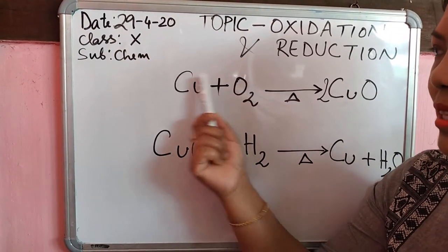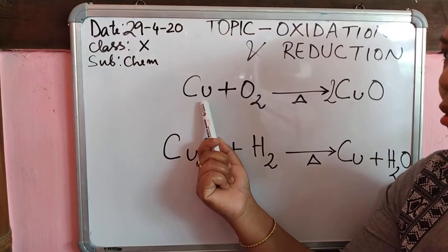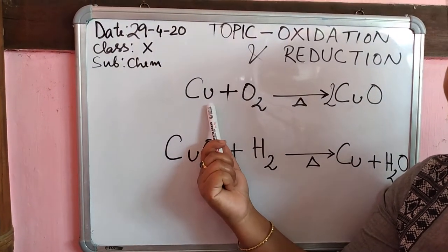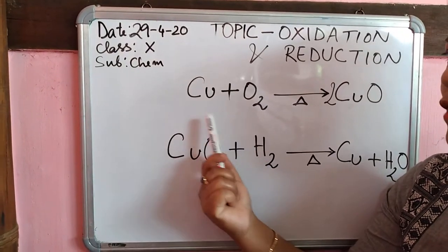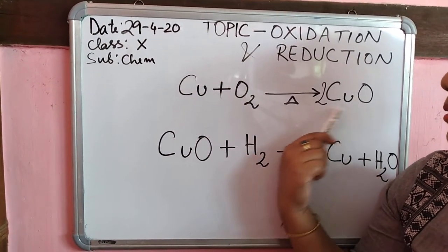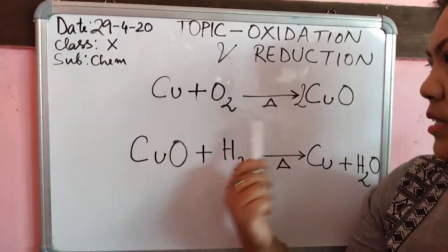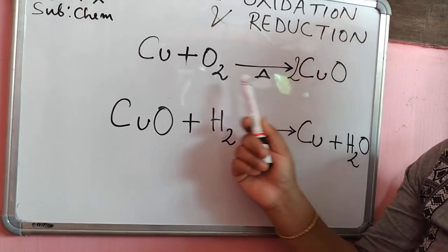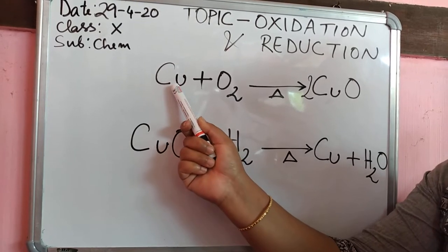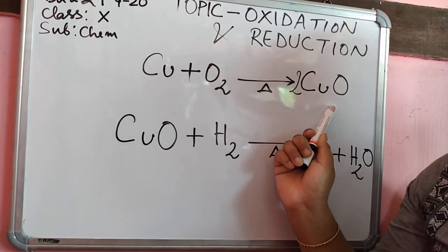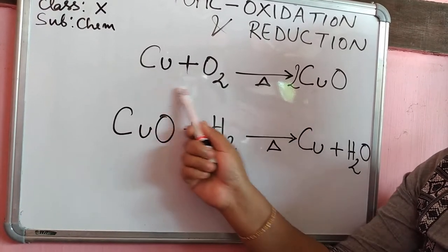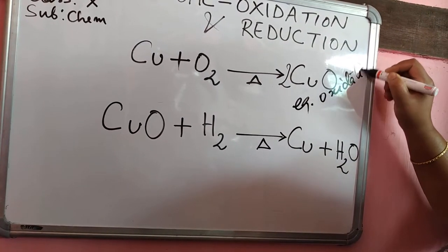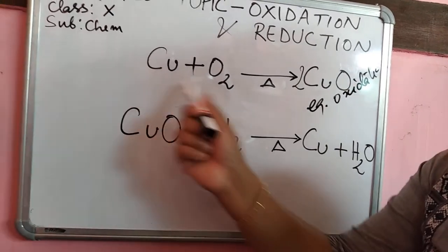Copper has a reddish brown surface. When you heat copper powder in the presence of oxygen, the surface of the copper gets coated with a black substance. That black substance is copper oxide. So here copper combines with oxygen and forms copper oxide. This is an example of an oxidation reaction.